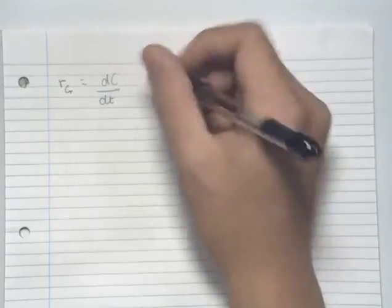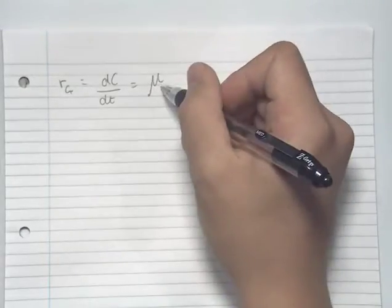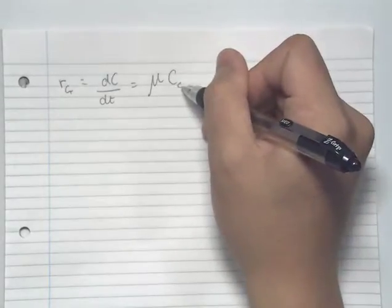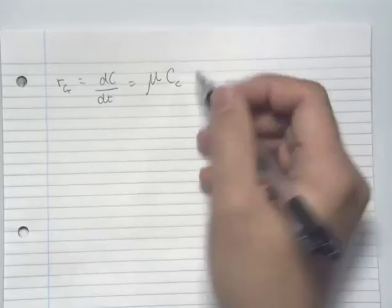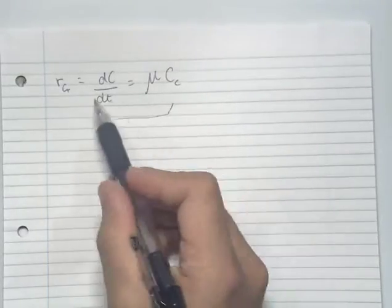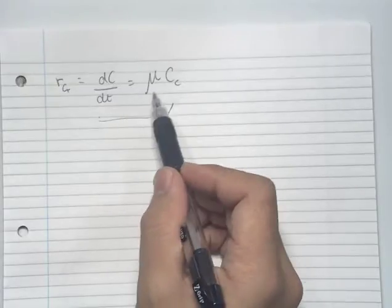We know that Rg, the growth rate of some cells, is equal to the differential dc/dt. And we know that this growth rate is equal to the specific growth rate, mu, times the concentration of cells, c. So we can integrate this equation in terms of concentration and time in order to solve for mu.